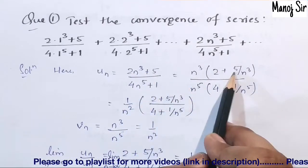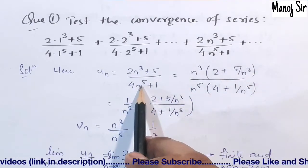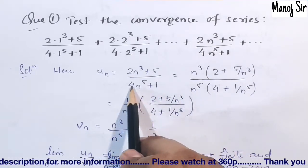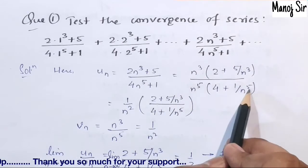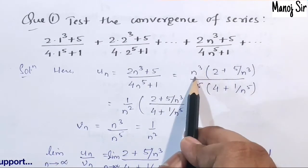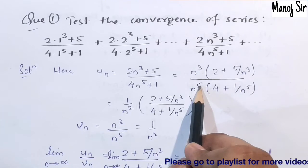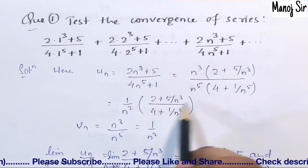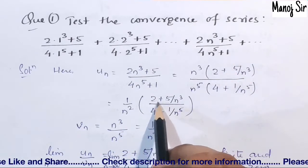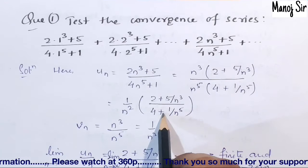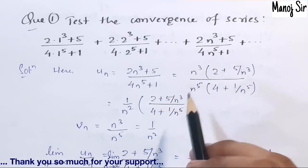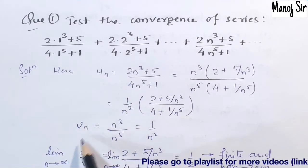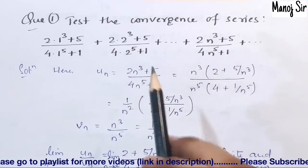From the numerator of u_n, take n^3 common to get n^3(2 + 5/n^3). From the denominator, take n^5 common to get n^5(4 + 1/n^5). Then n^3 divided by n^5 gives 1/n^2. So u_n simplifies to (1/n^2) × (2 + 5/n^3) / (4 + 1/n^5).